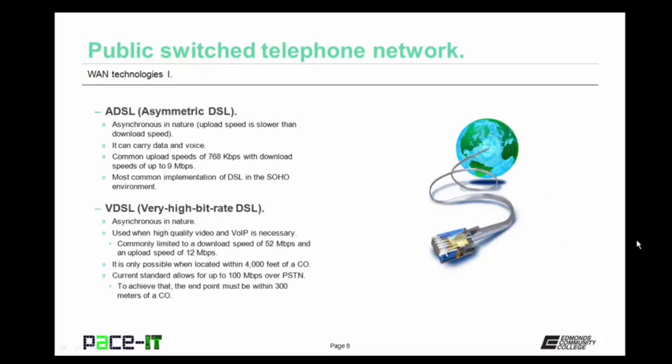More common than SDSL is ADSL, or Asymmetric DSL. It's asynchronous in nature — the upload speed is slower than the download speed. ADSL can carry data and voice. Common upload speeds for ADSL are 768 kilobits per second, with download speeds of up to 9 megabits per second. It is the most common implementation of DSL in the small office or home office environment.